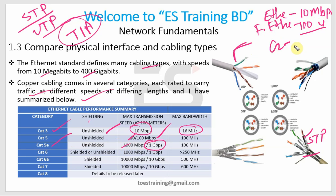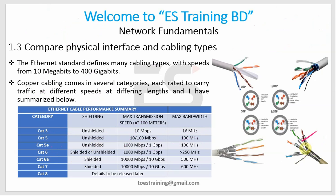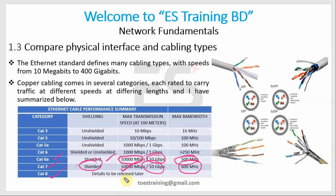Gigabit means 1000 Mbps. CAT6 is shielded, with speed up to 10,000 Mbps (10 Gbps) and bandwidth up to 500 MHz. CAT7 is also shielded, supporting 10 Gbps at 600 MHz. CAT8 details are to be released later, so that information is not yet available.